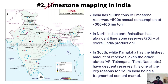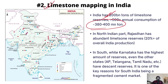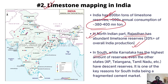India is a very self-sufficient country when it comes to limestone. We have around 200 billion tons of limestone reserves; our annual consumption is around 380-400 million tons, so we have around 500 times annual consumption as reserves — so there is no problem with reserves. However, these reserves are not equally distributed. In the north, Rajasthan has the most abundant limestone reserve — Rajasthan produces around 20% of India's overall limestone production. In the south, Karnataka has the highest reserves, and other states like Telangana, Kerala, and Tamil Nadu also have decent amounts. Around 70-80% of the gypsum in India is available in Rajasthan only.